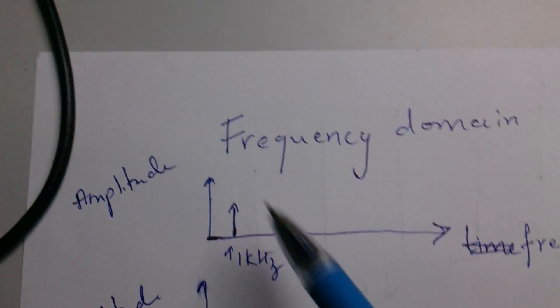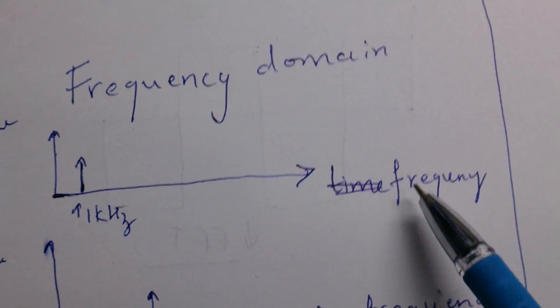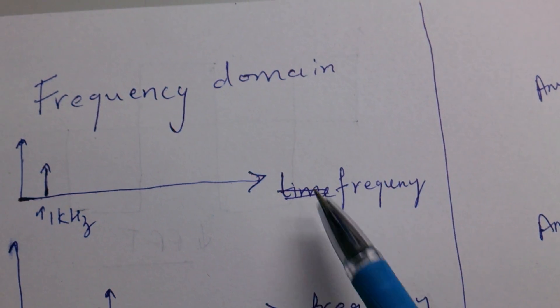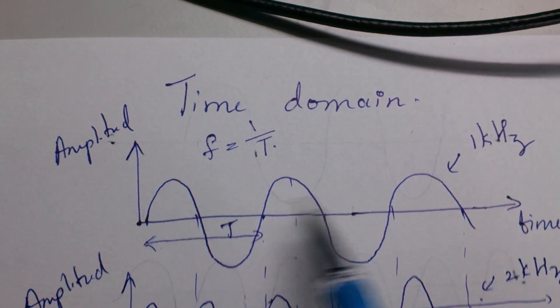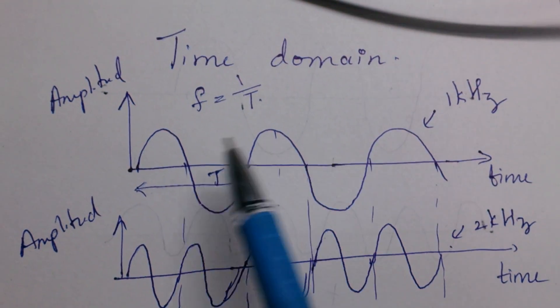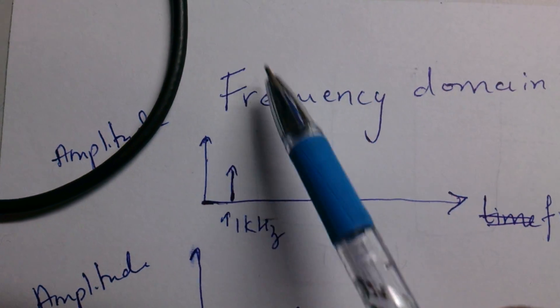In frequency domain what we do is we plot amplitude versus frequency. So we have amplitude on y-axis and frequency on x-axis for a signal. For this signal which is of frequency 1 kilohertz, if I plot it in frequency domain rather than in time domain it happens something like this.